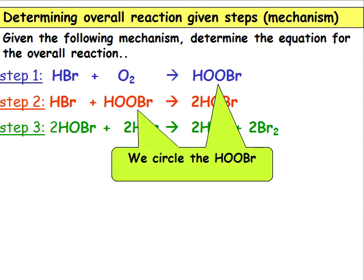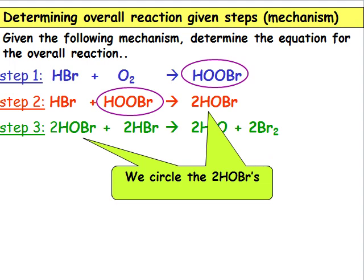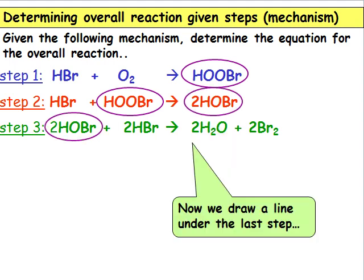We see that HOOBR is on the right of step 1 and on the left of step 2, so we circle it. We can also circle the two molecules of HOBr that appear on both sides. And now we draw a line under the last step.